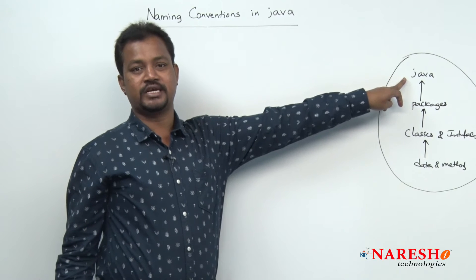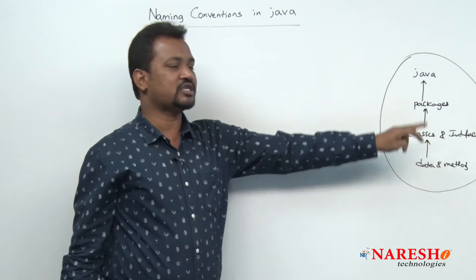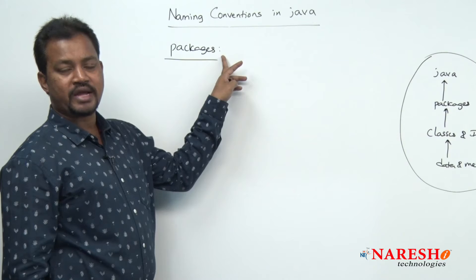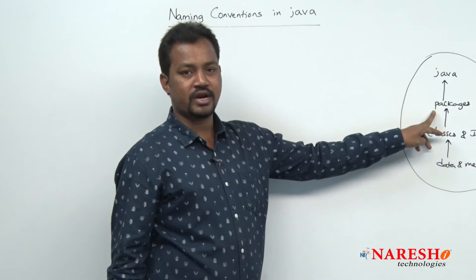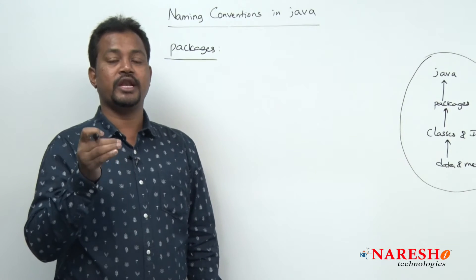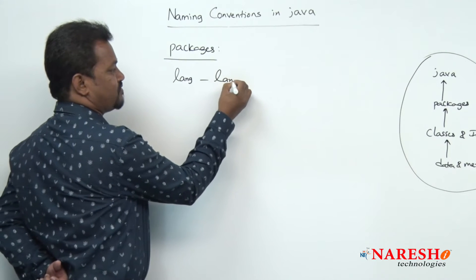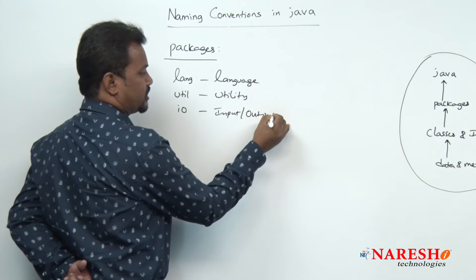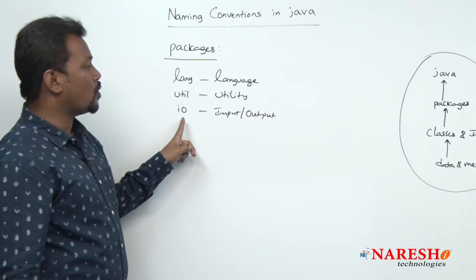Java library is represented by the keyword 'java' — in small letters, lowercase. Now for packages: by definition, a package is a collection of classes and interfaces. Whenever you want to write a package, as used in the last practical program with java.lang, you will use lower case letters. Packages must be coded in lower case format or small letters. Examples: lang (language package), util (utility package), io (input/output).